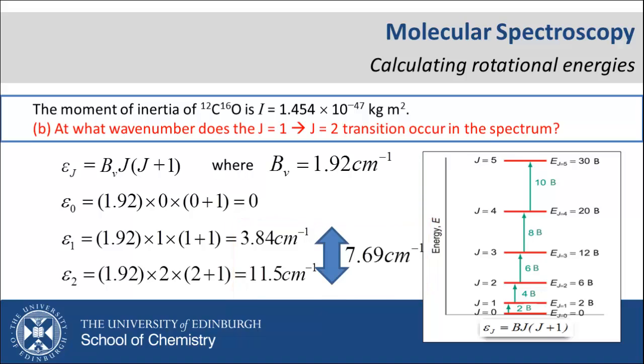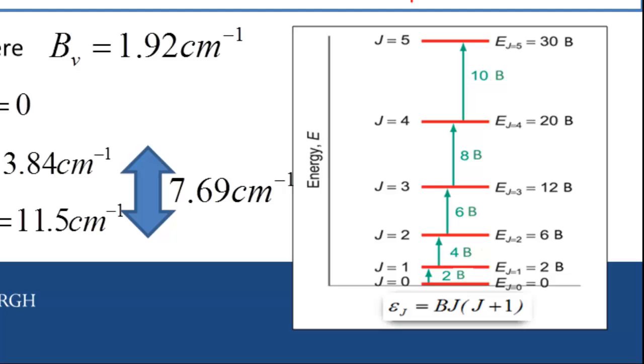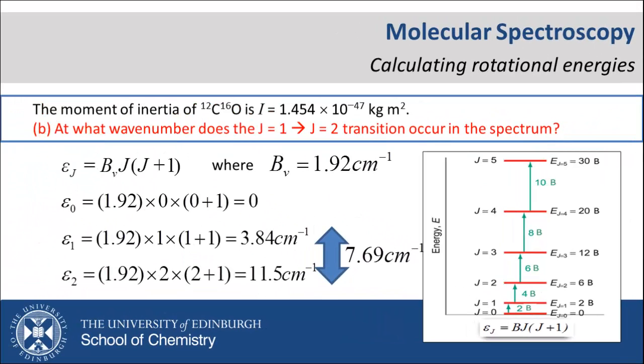Of course, if we look at our generic diagram, we can see this transition will have the value 4B, and indeed 4 times 1.92 wavenumbers gives us the same value.